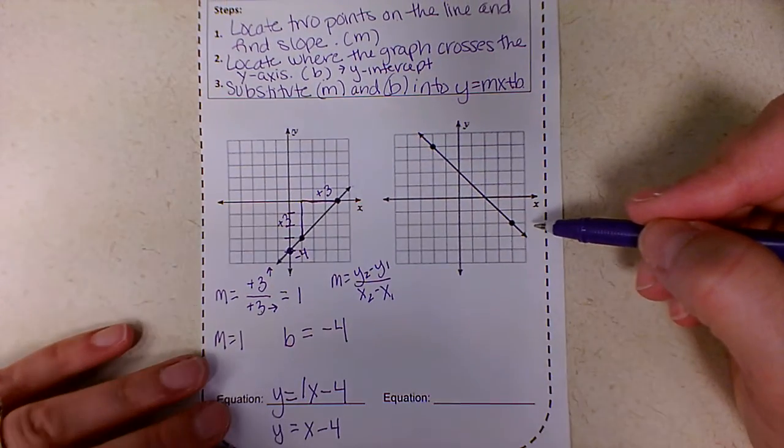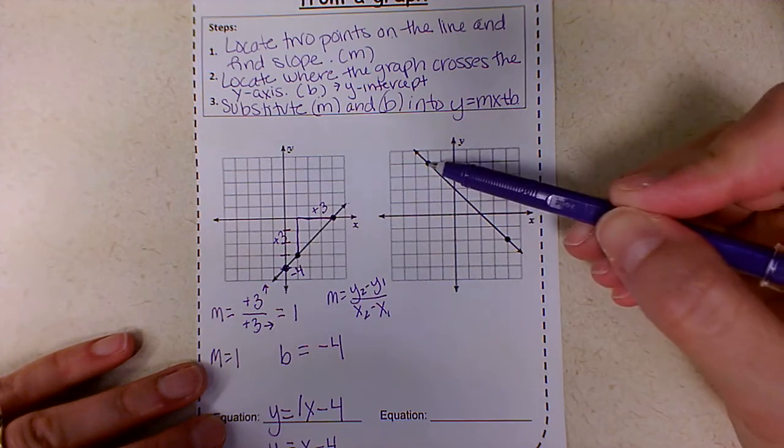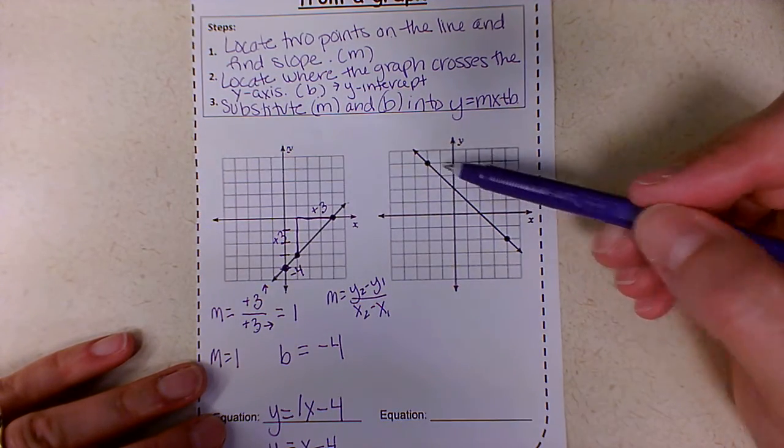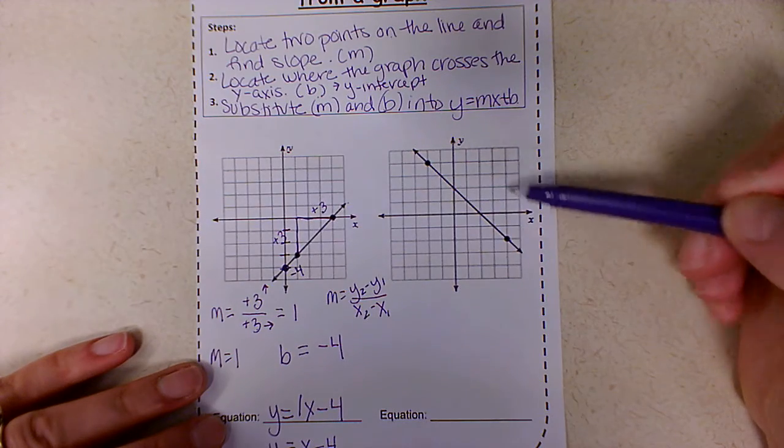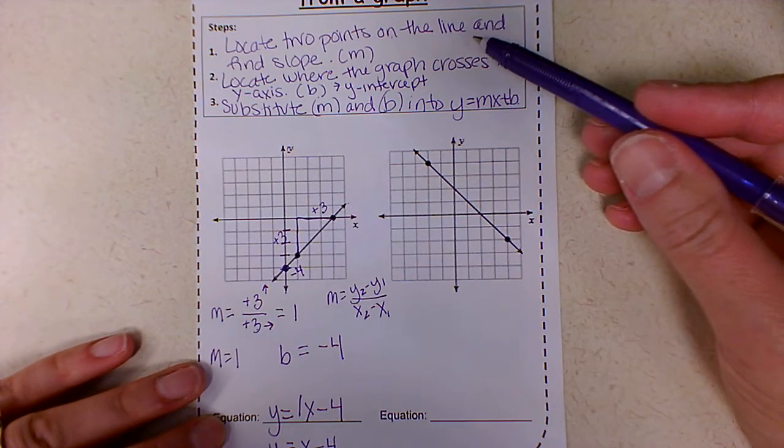All right, so let's go to the second example here. In this second example, we need to look at the line. Here's the line. Find two points. They already found two points for us. So these two points I'm going to use to, one, locate the, sorry, find, I already located them, find the slope.